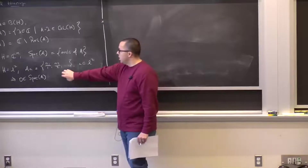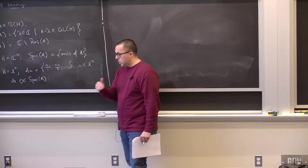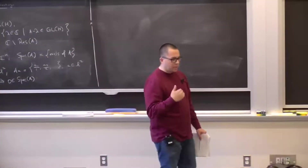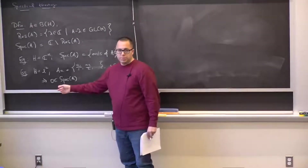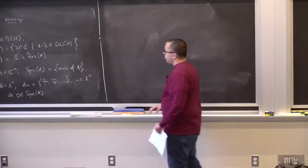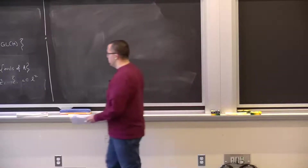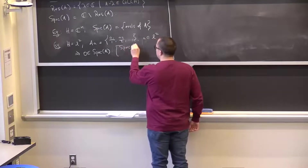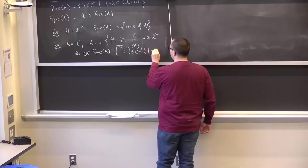In general, for compact self-adjoint operators in the non-degenerate case, if it is not a finite rank operator, then it has countably infinitely many eigenvalues which converge to 0. Zero may or may not itself be an eigenvalue. For this specific example, the spectrum of A equals {0} ∪ {1/n : n ∈ ℕ}, where 0 is not an eigenvalue.